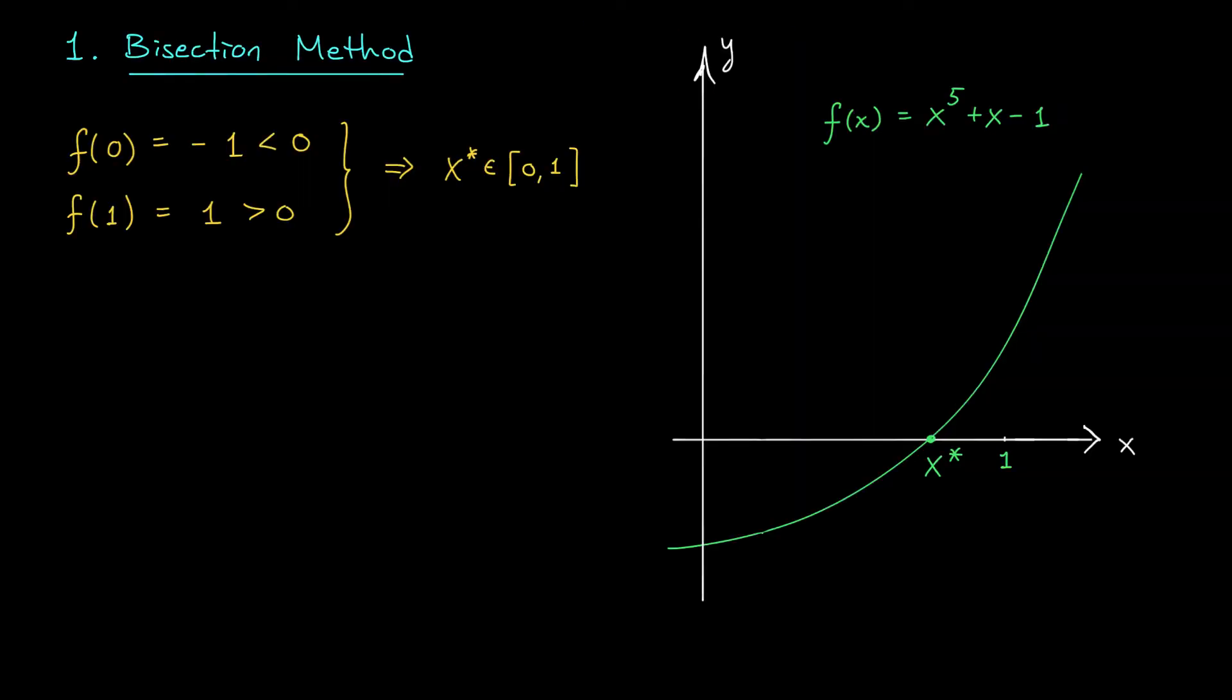From the previous slide, we saw that the function f(x) equals x to the 5 plus x minus 1 must have a 0 somewhere between x equals 0 and x equals 1, right? You can actually confirm this fact using the intermediate value theorem. If you plug in 0, you get a negative number. If you plug in 1, you get a positive number. The function's continuous though, right? So there has to be a point somewhere in between, we'll call it x star, where the function crosses the x axis.